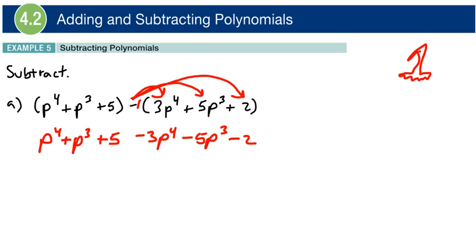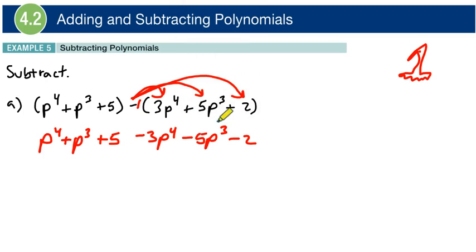Okay, and so now we're going to go ahead and combine like terms. We can combine P to the power of 4 and negative 3P to the power of 4, right? Because they have the same base and the same exponent. We can combine P cubed and negative 5P cubed. We can combine those together. And we can combine obviously 5 and then negative 2, because those are the same right there.